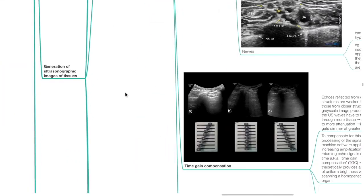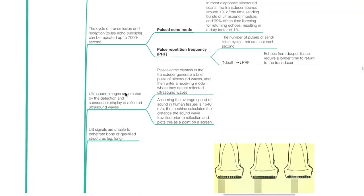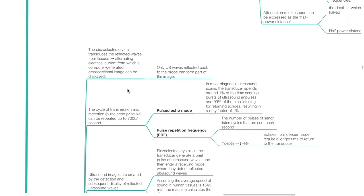Generation of ultrasonographic images: the piezoelectric crystal transduces reflected waves from tissues, producing alternating electrical current from which a computer-generated cross-sectional image can be displayed. The cycle of transmission and reception — the pulse echo principle — can be repeated up to 7,000 times per second. In pulsed echo mode, the transducer spends around 1% of the time sending bursts of ultrasound impulses and 99% of the time listening for returning echoes, resulting in a duty factor of 1%. Pulse repetition frequency (PRF) refers to the number of send-and-listen cycles sent each second.